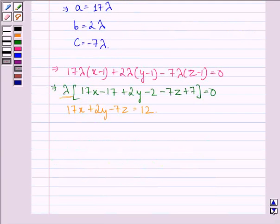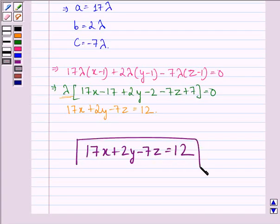So the required plane is 17x + 2y - 7z = 12, and this is also our answer to this question. I hope that you understood the solution. I enjoyed the session. Have a good day.